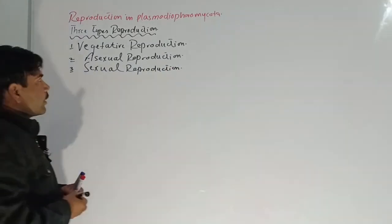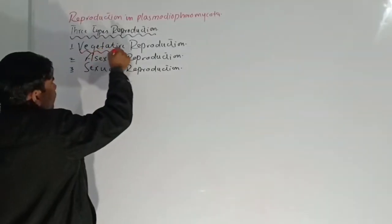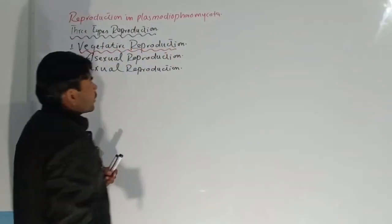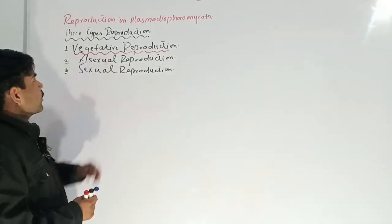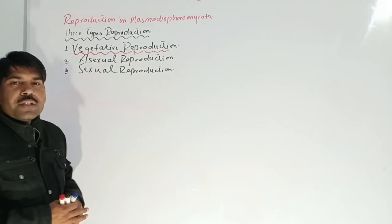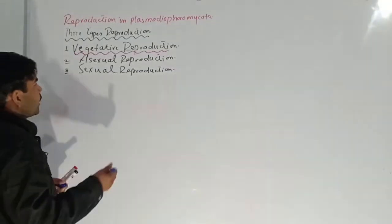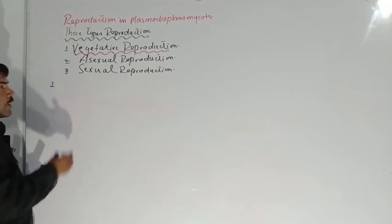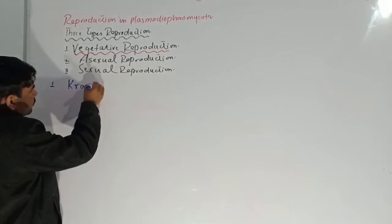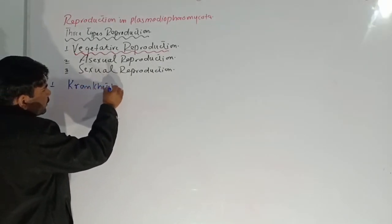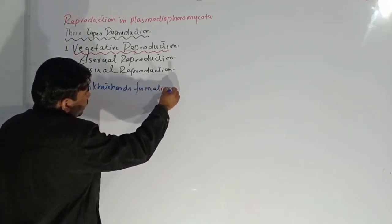First, we will discuss vegetative reproduction. There are two methods through which vegetative reproduction occurs. The first method is known as crinkled cell formation, and the second method is fragmentation.